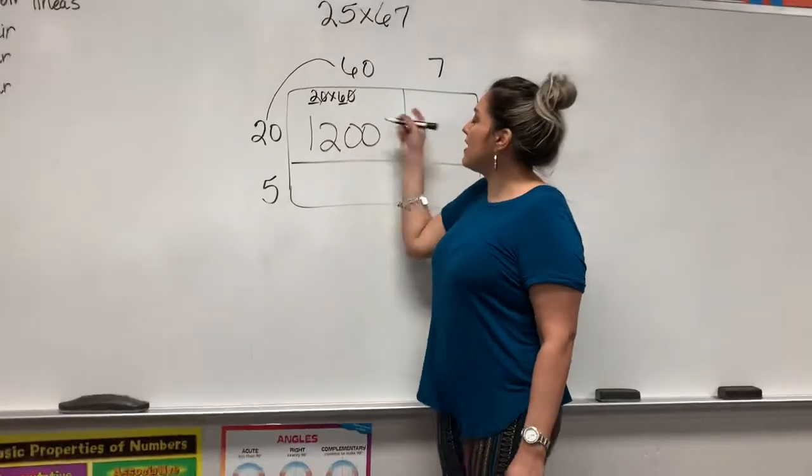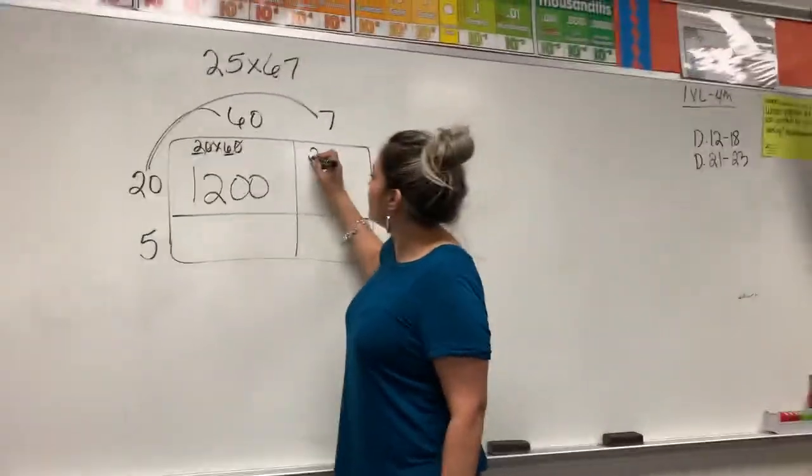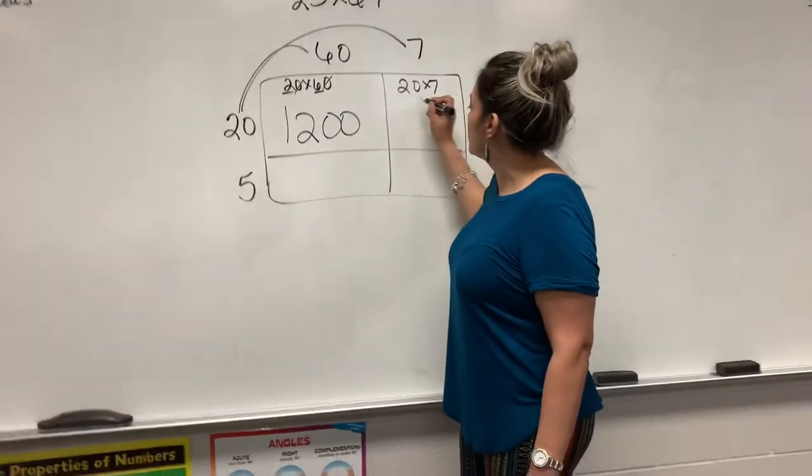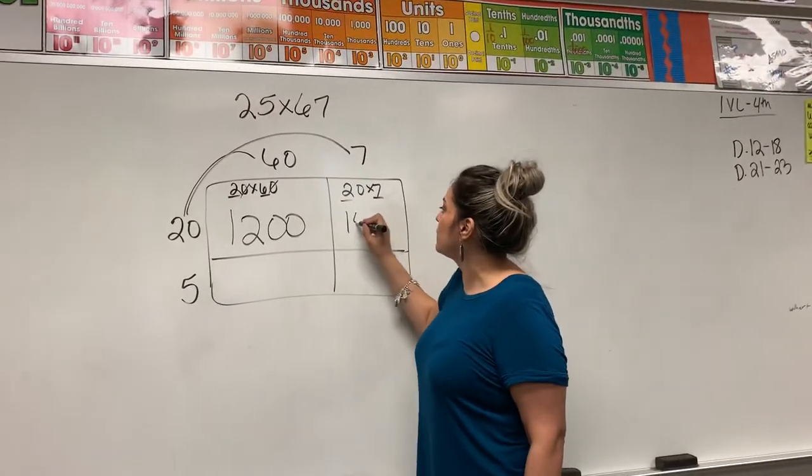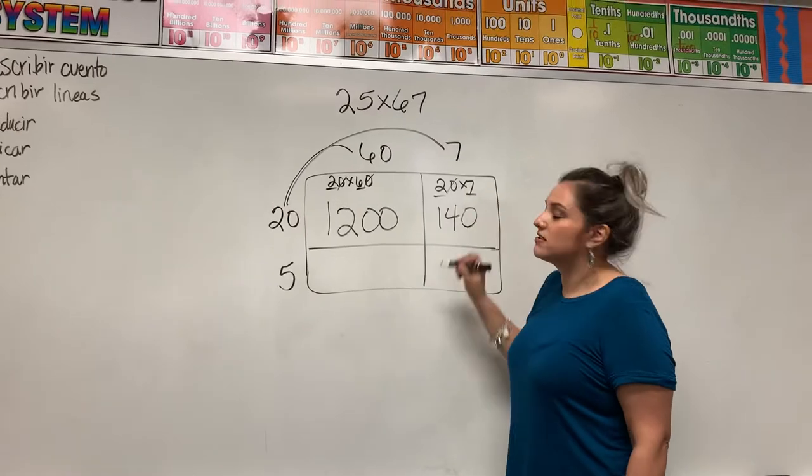Then the next one is your next quadrant. 20 times 7. 20 times 7. 2 times 7 is 14 with my 0.